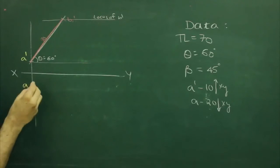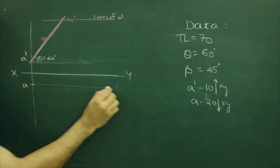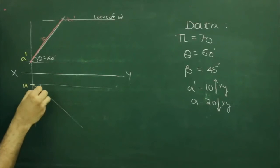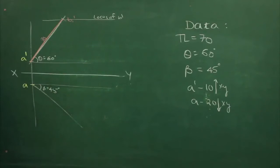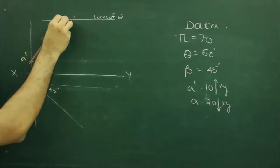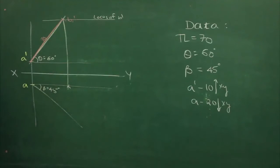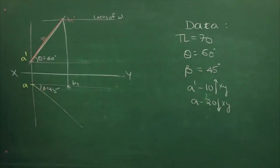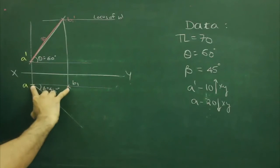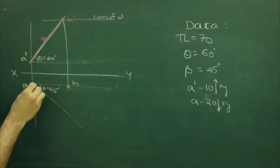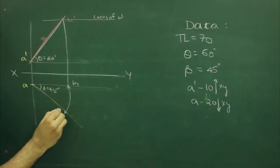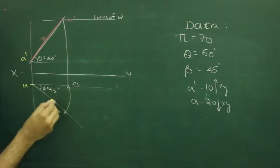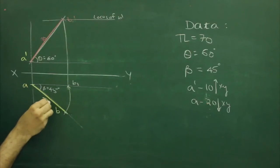After that we have another angle beta. I can draw beta which is 45 degrees. Now I can project b1-dash straight down till a — that point would be b1. Take a to b1 in your compass and from a you can rotate. Wherever it cuts, that would be b — that would be the top view.